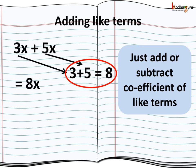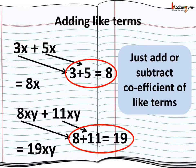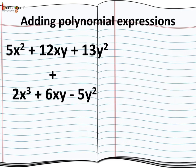Another example, 8xy plus 11xy. Here 11 plus 8 is equal to 19. And the algebraic factors remain unchanged. So the sum of 8xy plus 11xy is 19xy.